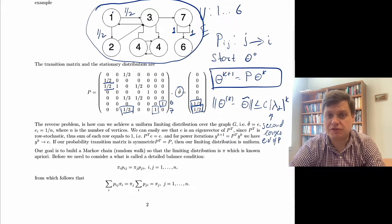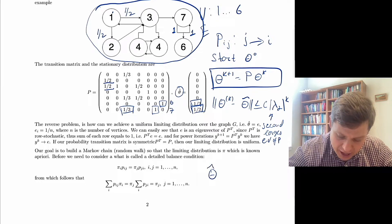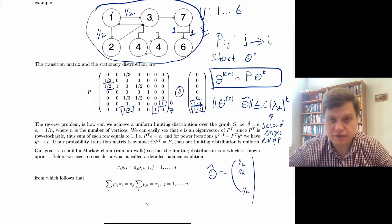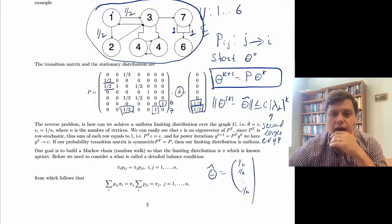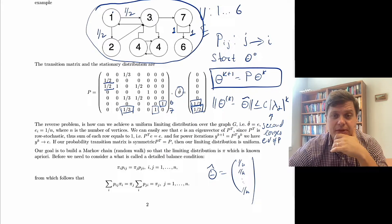The reverse problem boils down to designing the transition probability matrix P, given that your target distribution theta-hat is uniform — meaning if you have n vertices on the graph, you have probability 1/n for each of those vertices — and to design the probability transition matrix P so that the stationary target distribution is uniform.